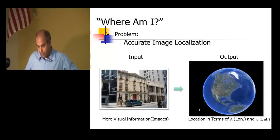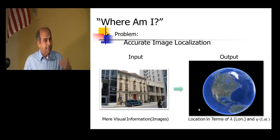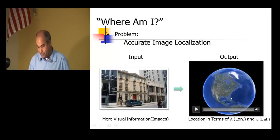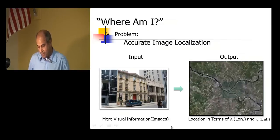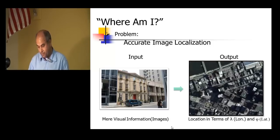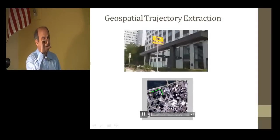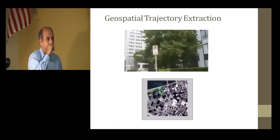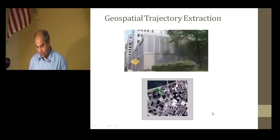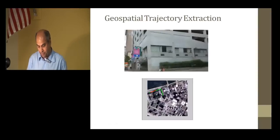Another application is localization — where am I? You go somewhere, get lost, take a picture, and the program tells you the GPS location. If you have a camera without GPS and GPS doesn't work, you can do it using images. Given a picture, our method will tell you it was taken somewhere in Pittsburgh and gives the longitude and latitude. You can extend this to video: if you drive through a city and record a video, you can determine the trajectory. The red line shows you are in Pittsburgh and shows the trajectory you drove — done using a computer vision algorithm.